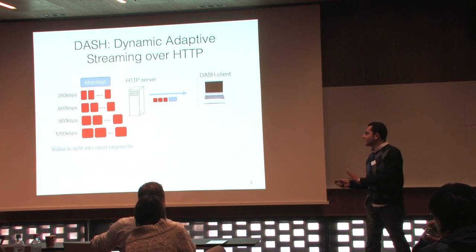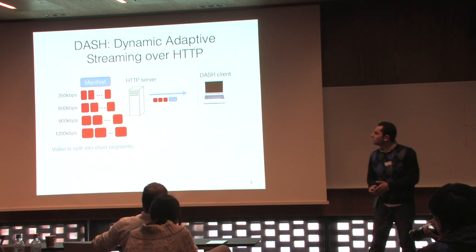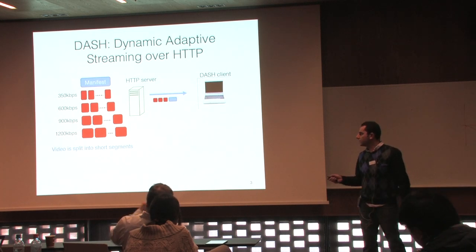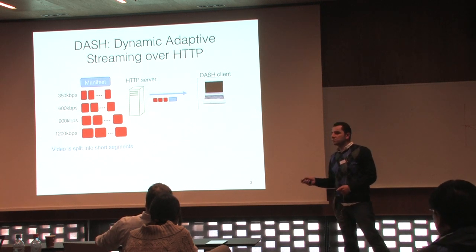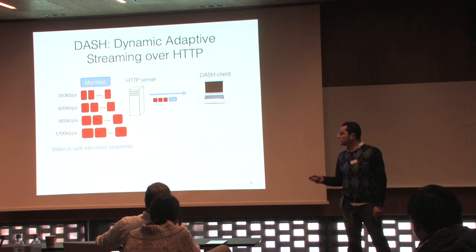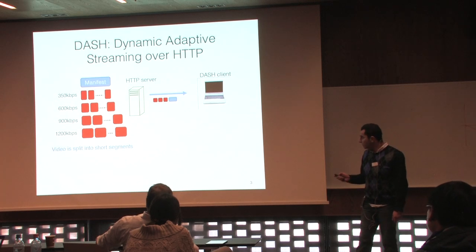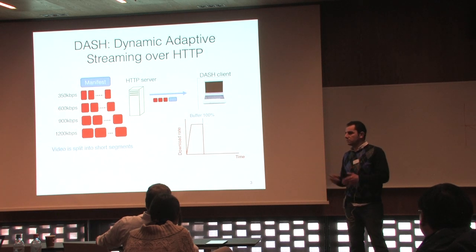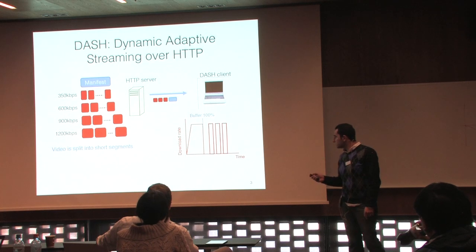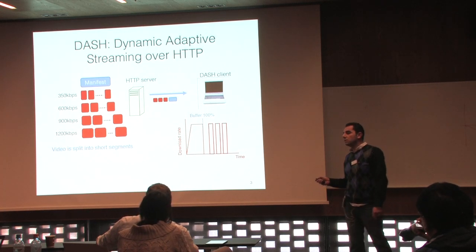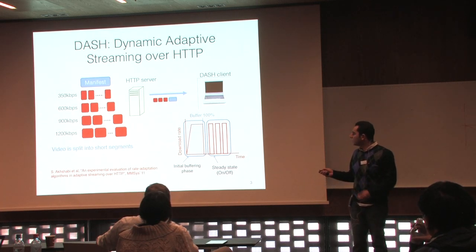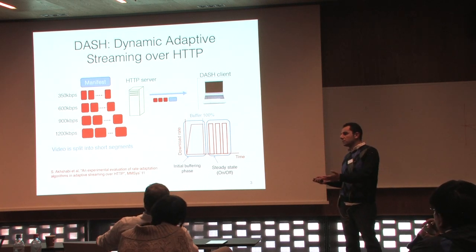Let me briefly introduce DASH. A video is split into segments of a few seconds each. Every segment is encoded at multiple bitrates, and a manifest XML file describes all segments and bitrates, hosted on an HTTP server. The DASH client downloads the manifest file first, then starts downloading video segments. A typical DASH player has a playout buffer. Initially it downloads as fast as possible — the initial buffering phase — then moves to a steady-state on-off phase, periodically downloading one new segment every few seconds.